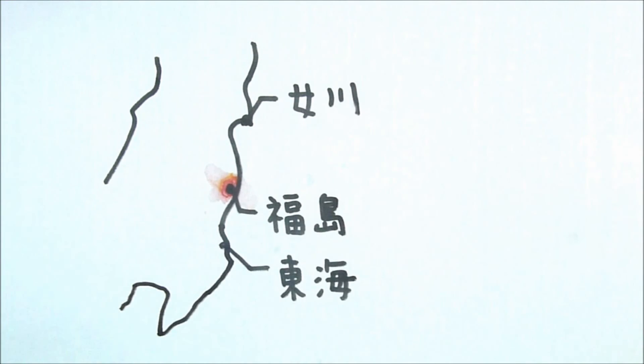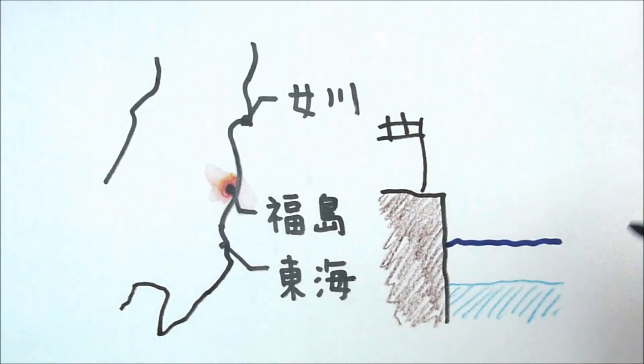Luckily, two other nuclear plants in the area, Onagawa and Tokai Daiichi, did not lose their power supply.